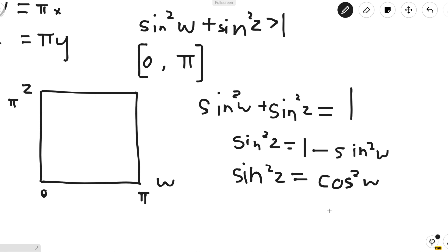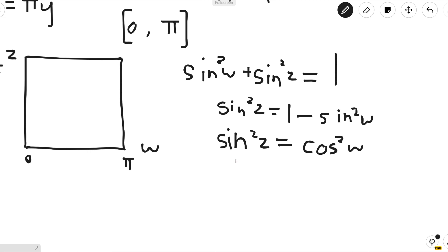Now since z and w are from 0 to π, sine of z will always be positive. But cosine of w will be positive from 0 to π/2 and negative from π/2 to π. So we can split this into two cases: one where w ≤ π/2 and one where w is greater.